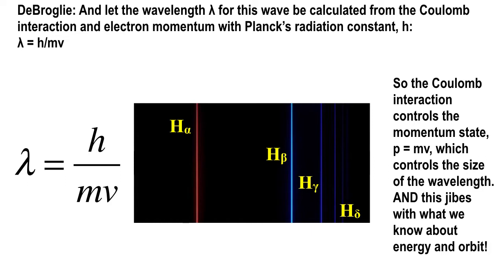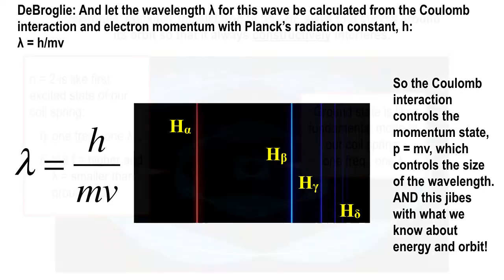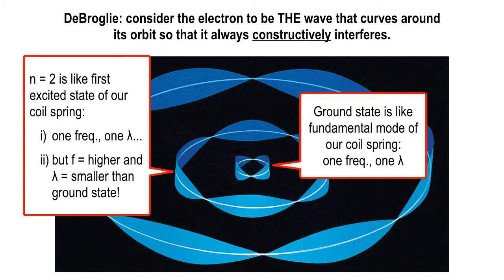So de Broglie made this conjecture: don't just treat an electron as a particle, treat it as a wave and as a particle. It's this mysterious wave-particle entity. I never use the word 'duality' — I don't like that. It's just an object that behaves as a particle and as a wave, and everything is set.